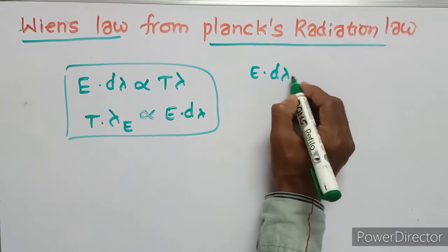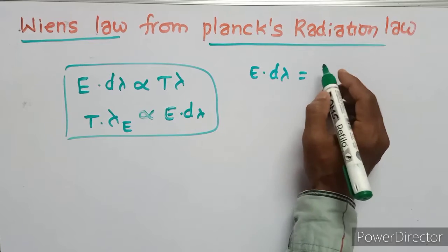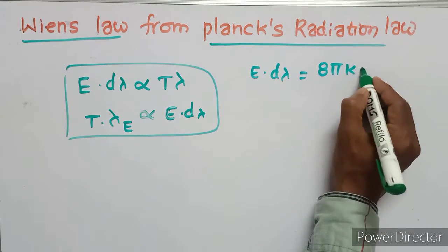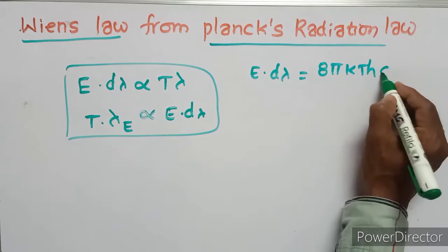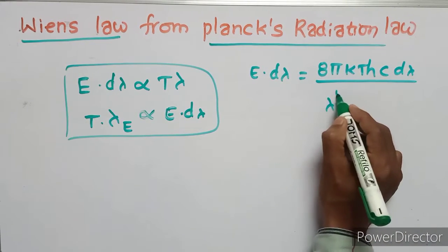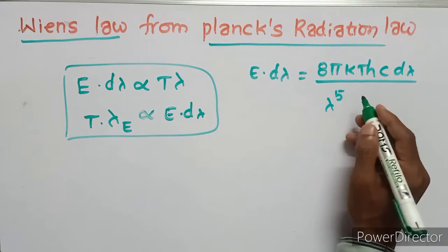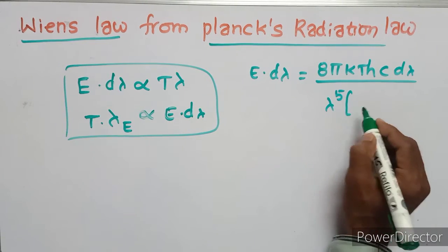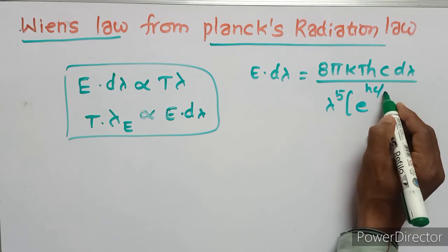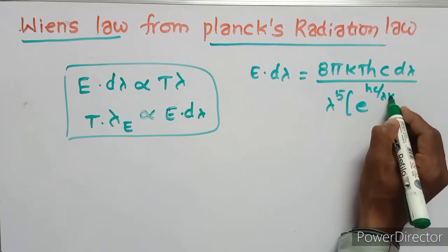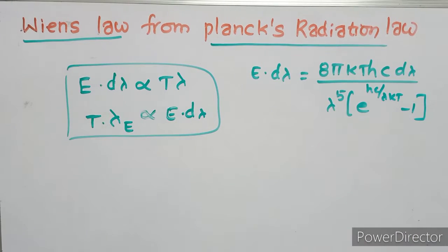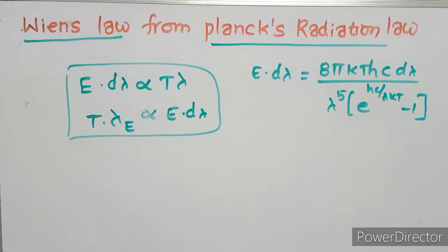Planck's radiation law is: E·d_lambda equals 8·pi·k·T·h·c·d_lambda divided by lambda to the power of 5, multiplied by (e to the power of hc/lambda·kT minus 1).